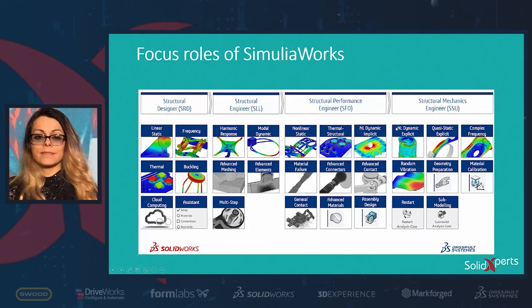With the Structural Mechanics Engineer role, we have access to all analyses and modules in the Structural Performance Engineer role. In addition, we have access to non-linear dynamic explicit analysis — mostly used for metal forming processes such as extrusion, forging, or bending.